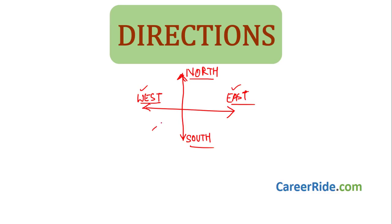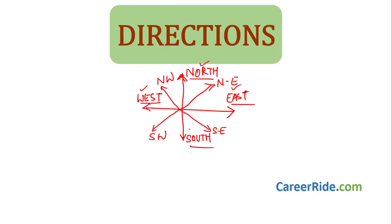Apart from these four, there are four other directions. This is Northeast because it lies between North and East. This is Southeast because it lies between South and East. This lies between South and West, so it is Southwest. This lies between North and West, so this is Northwest. Note: North or South is written first, then East or West. So: Northwest, Northeast, Southeast, and Southwest. These are the eight main directions you should know for solving direction sense test problems.